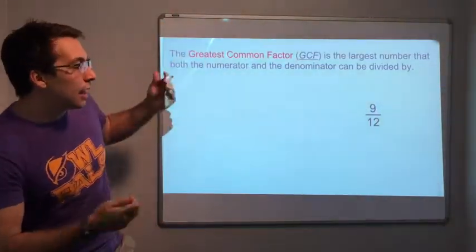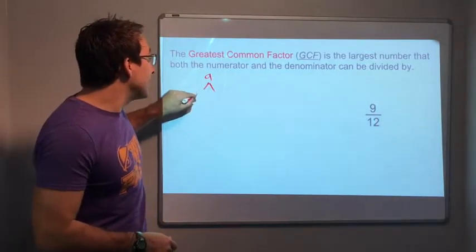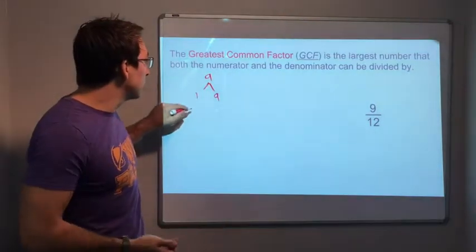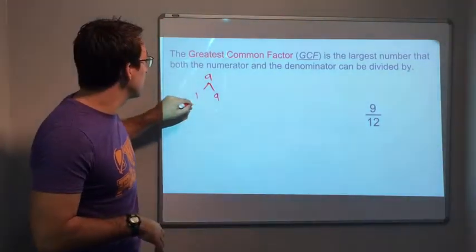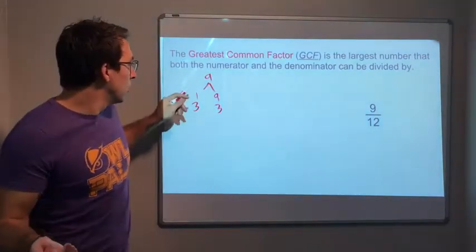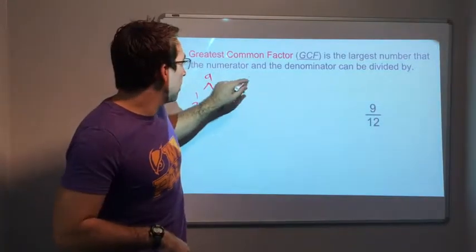So let's look at factors of 9. 1 times 9, right? 1 and that number is always a factor. 2 times, no. So now it's 3 times 3 equals 9. And that's it. 1, 3, and 9. That's all there is for factors of 9.